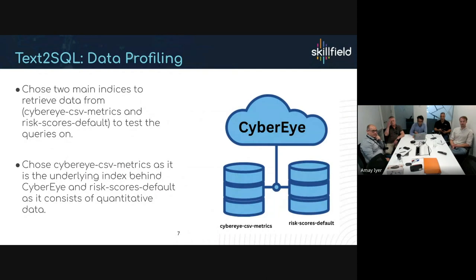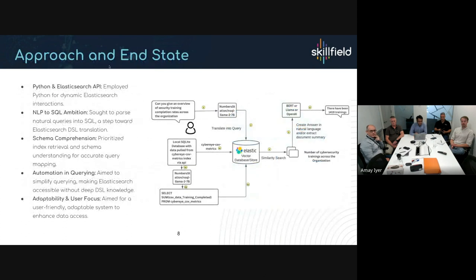For data profiling, we chose two main indexes: cyber CSV metrics and risk scores default. Cyber CSV metrics is fairly small in field count but spans a large variety of metrics and is one of the main underlying indexes in the Cyber Eye database, making it a good test candidate. Risk scores default is a more quantitative index that gives numerical answers, helping assess risks and the future of Cyber Eye.